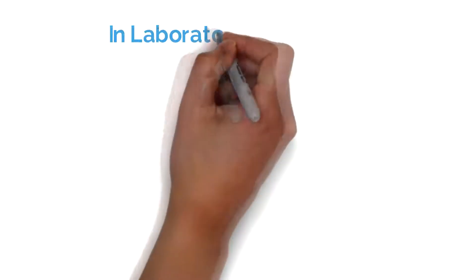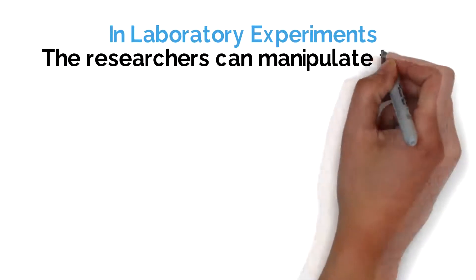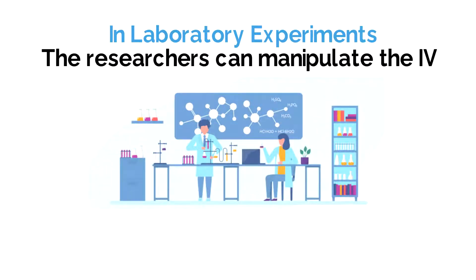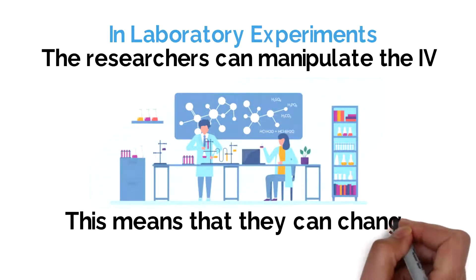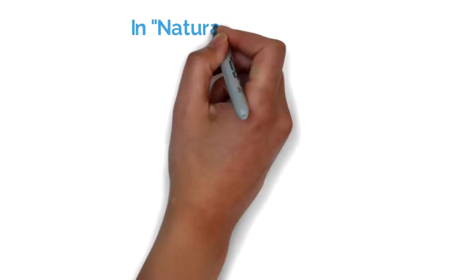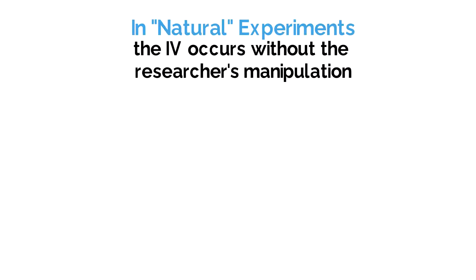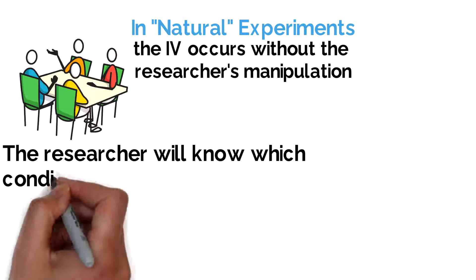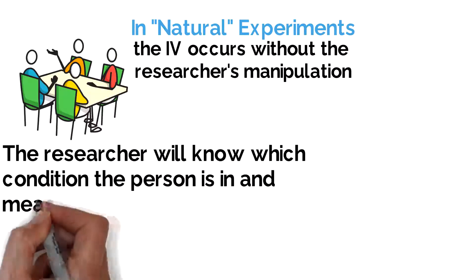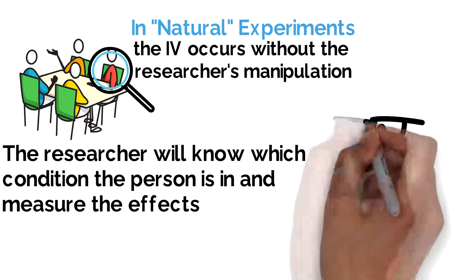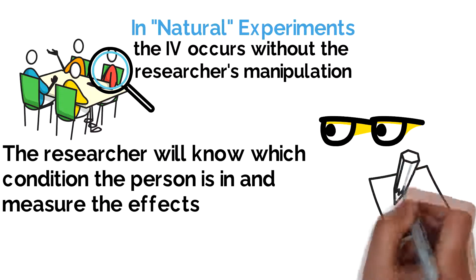In the laboratory or field experiment, the researcher manipulates the independent variable, which means that they can make the conditions themselves where they can then measure the effect. In a quasi- or natural experiment, the independent variable is naturally occurring without the researcher's manipulation. The researcher will have some way of knowing which group or condition the person is in and will just measure the effects.